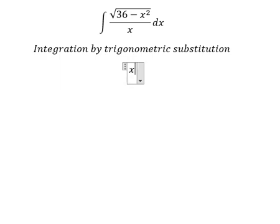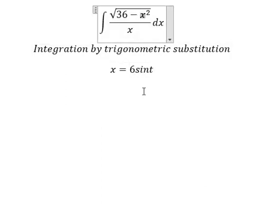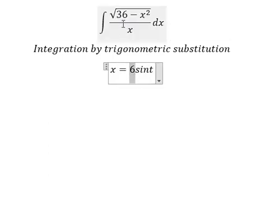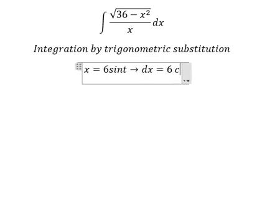I will put x equals 6 sine t, because if I put this one here, we have 36 sine t square. We can do factorization: 1 minus sine t square, we change for cosine t square, and later we can simplify the square root. Next we need to do first derivative for both sides and we have 6 cosine t dt.